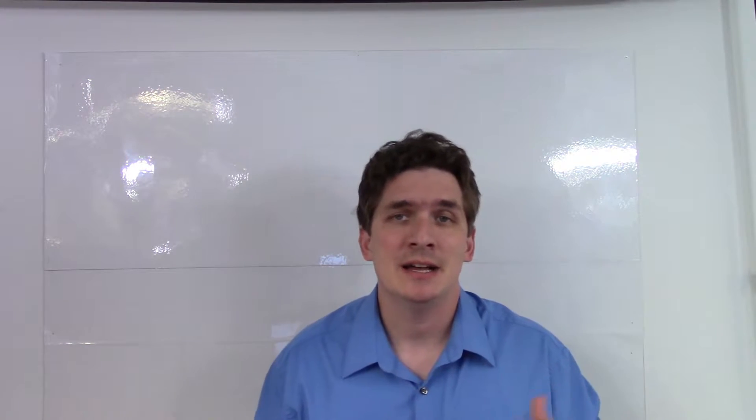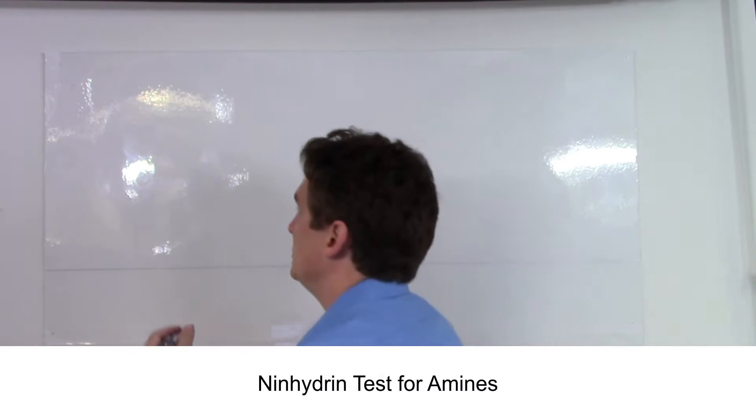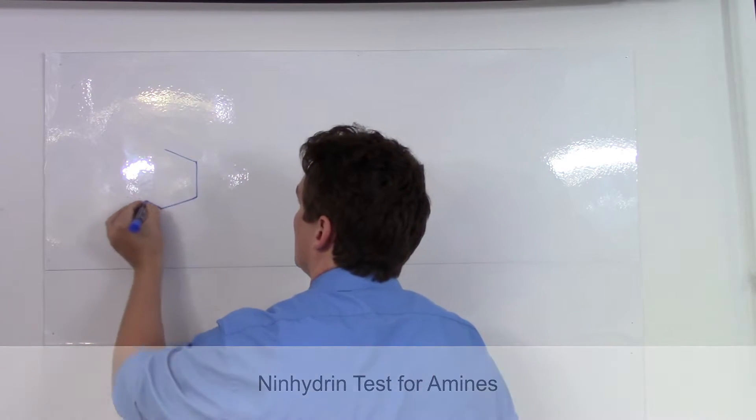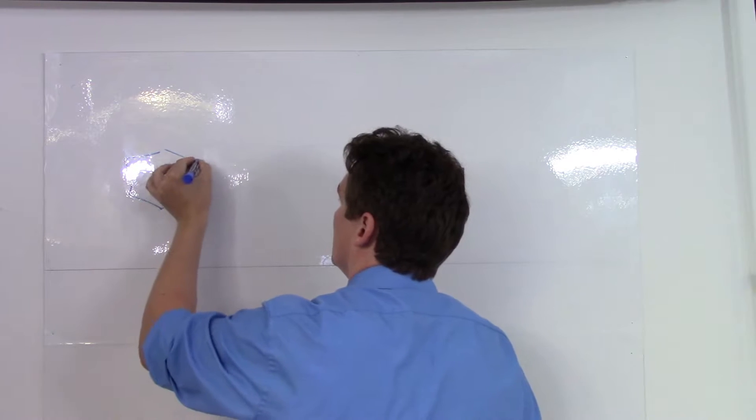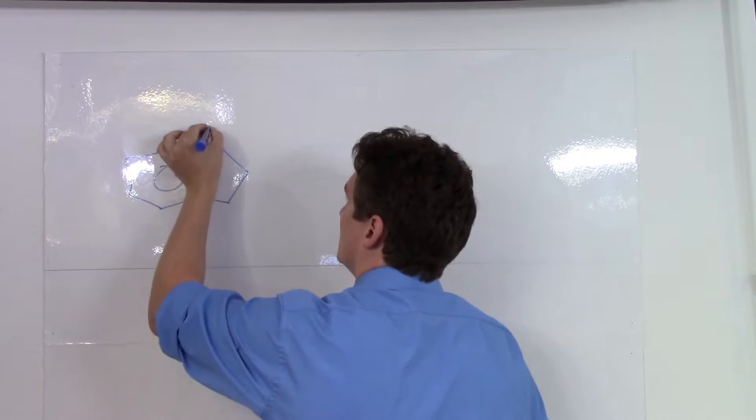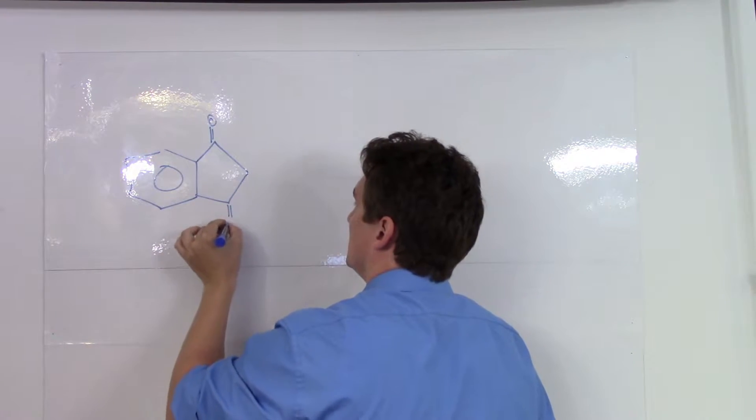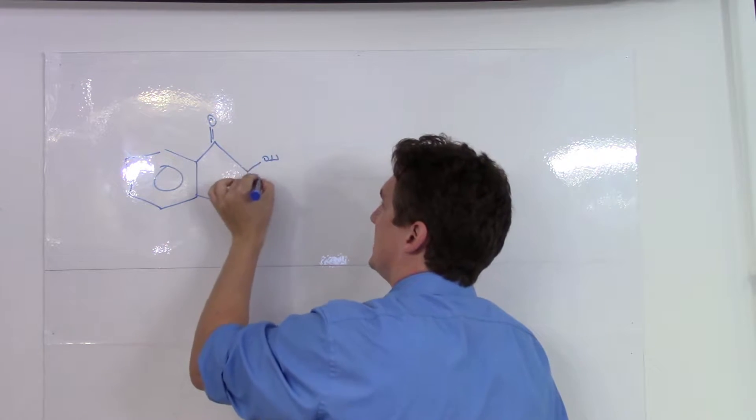And the first one we're going to work with is the ninhydrin reaction. So the ninhydrin reaction is, well, ninhydrin is this vicinal diol.